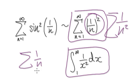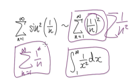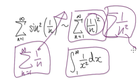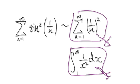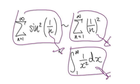The minute you see sum of 1 over n from n equals 1 to infinity, you should know this diverges, while sum of 1 over n squared converges. If the approximation 1 over n squared converges, then the original series sine squared of 1 over n will also converge.